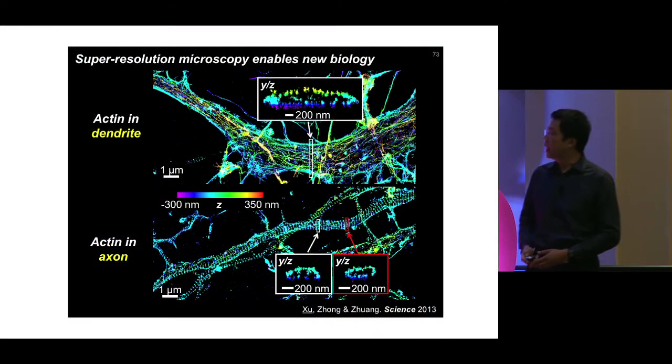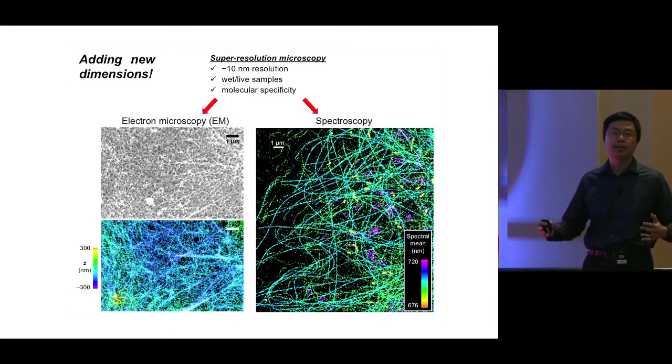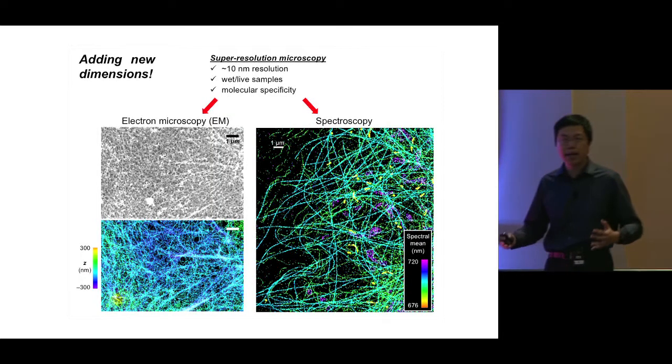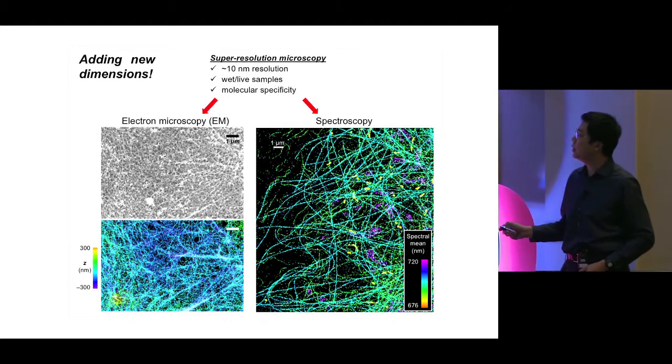I was excited about this and we published the work. As I started a new lab, I've been figuring out what the remaining difficulties are and what we can do beyond that. Super-resolution microscopy has 10 nanometer resolution, works well with wet and live samples, and has good molecular specificity. Over the past three years we've been adding new dimensions to super-resolution microscopy.